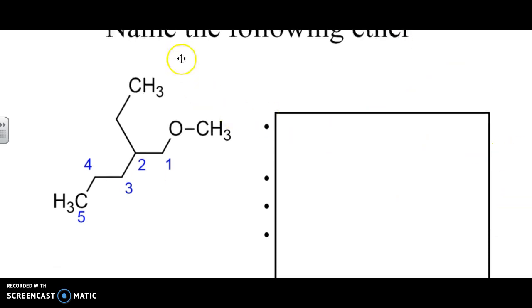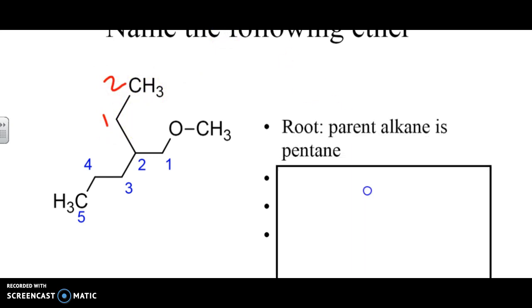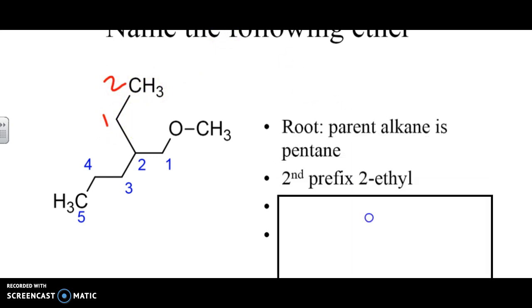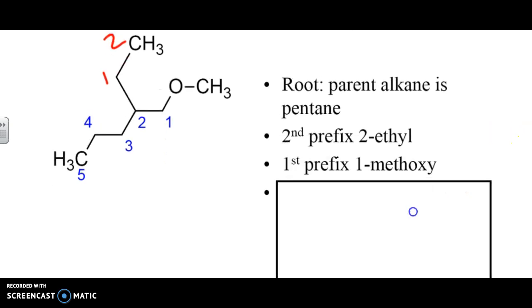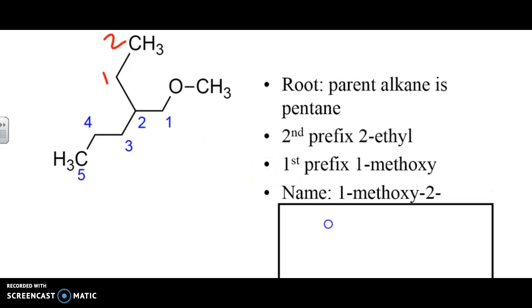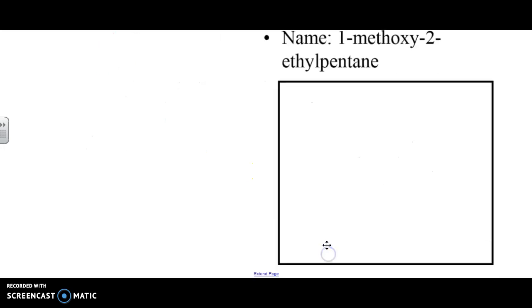So if we look at this example right here, we can see we've got a one-carbon chain, and this piece is going to be a methoxy. At spot two, we've got a two-carbon chain, so this is going to be an ethyl. So when we put this all together, the root chain is pentane. The second prefix is two-ethyl. The first prefix, because it's going to be the most important one, is one-methoxy, to indicate it's at spot one. So therefore, our answer is one-methoxy-two-ethylpentane.